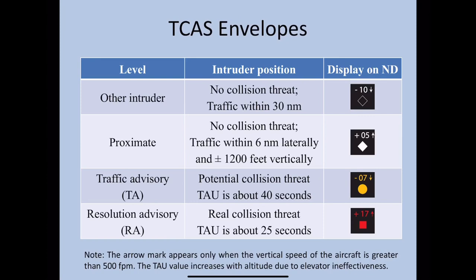This is very important: you should make sure your aircraft is climbing at least 500 feet per minute in airspaces where TCAS is mandatory, because otherwise the arrow mark will not appear on the TCAS of the other aircraft.